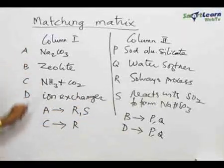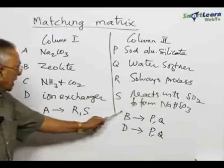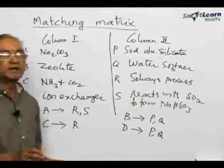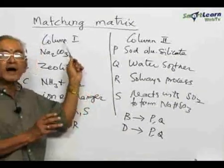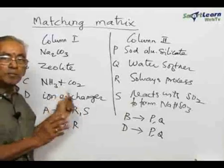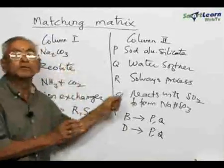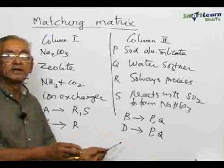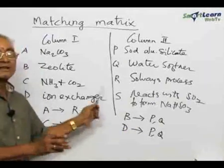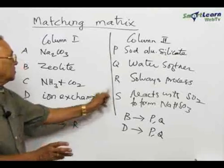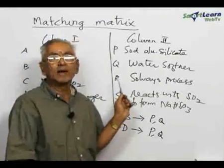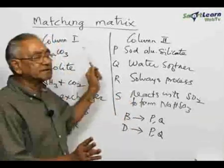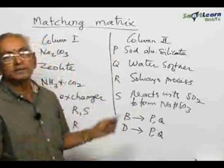So, A matches with R and S, B matches with P and Q, and D matches with P and Q. The purpose of this question is that whatever is asked in the left hand side column should match not necessarily with just one, but with more than one on the right. Sometimes it will match with all four, but in most cases — three out of four — it matches with more than one. C alone matches with only one, which is the Solvay process. This is referred to as a matching matrix question, where we fill it up with whatever matches in column 2 with those in column 1.